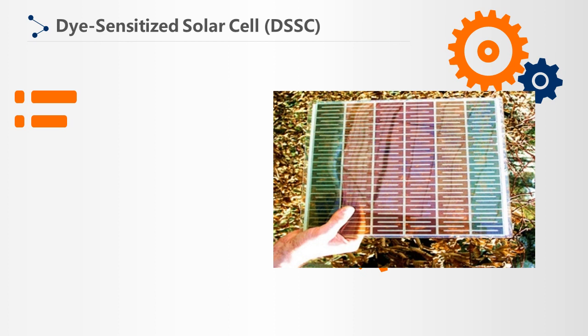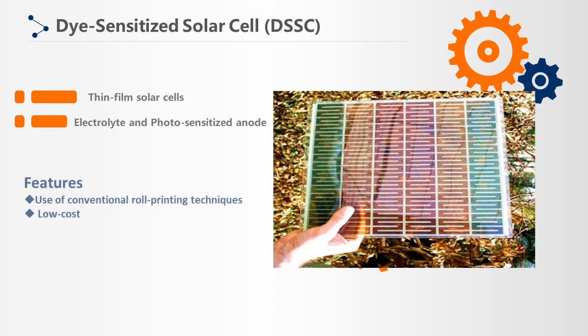Dye-sensitized solar cell is a low-cost solar cell belonging to the category of thin-film solar cells. It is based on a semiconductor formed between an electrolyte and a photosensitized anode. Dye-sensitized solar cells have many attractive features — they are easy to make using conventional roll printing techniques, and most of the materials used are low-cost.